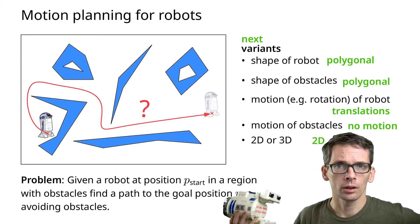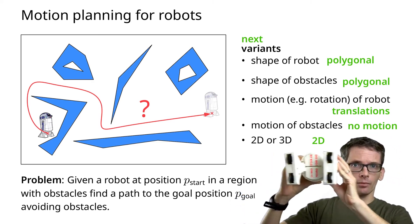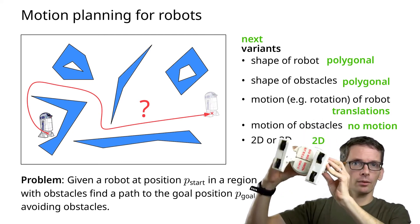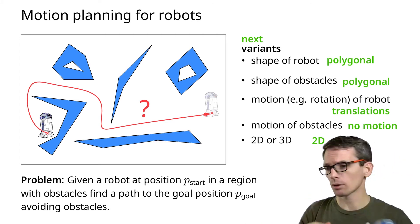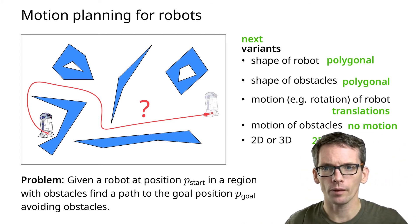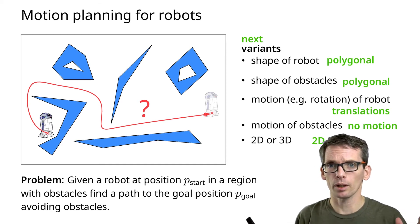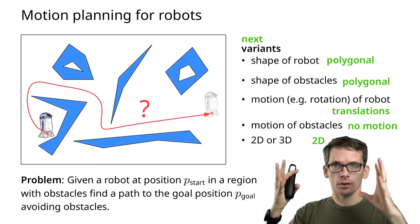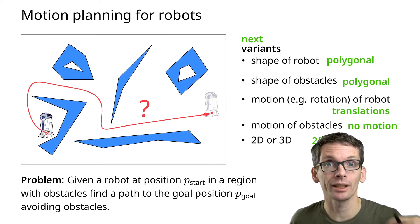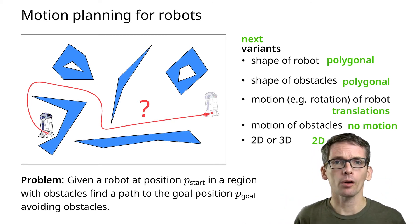For the motion, we only allow translations — the robot can move left, right, up, and down but won't rotate; rotations we'll look at later. Obstacles aren't moving and we're in 2D. The question is: can a polygonal robot move from a start position to a goal position avoiding polygonal obstacles? And for this we'll need the concept of configuration spaces.